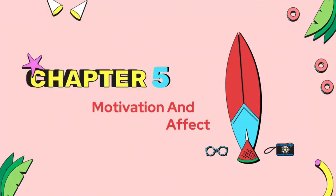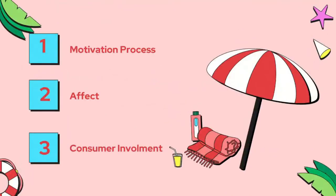Good morning everyone, we are group number five and we're going to present chapter number five and chapter number six. First of all, we would like to introduce ourselves. We will move to chapter number five: motivations and affect. Welcome to chapter five — motivation and affect. Chapter five consists of three parts: one, motivation process; two, affect; three, consumer involvement.